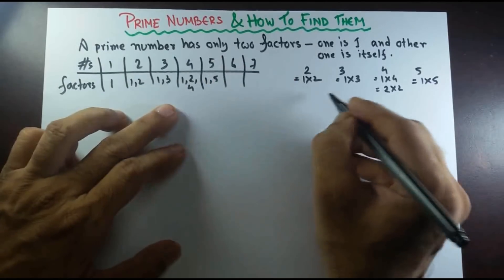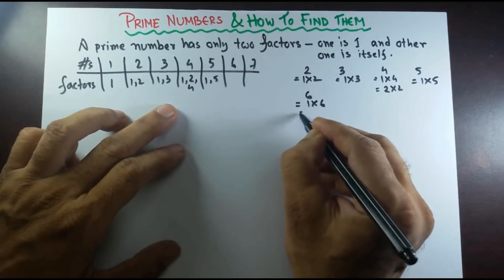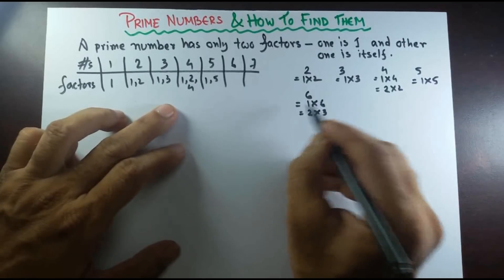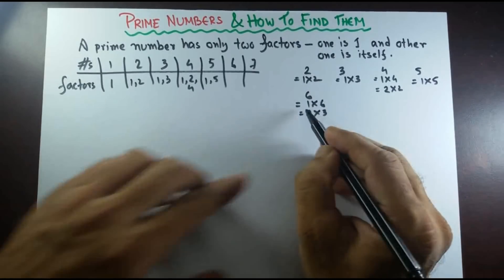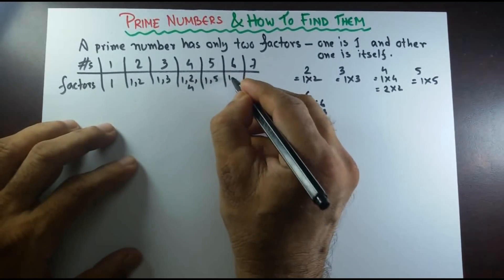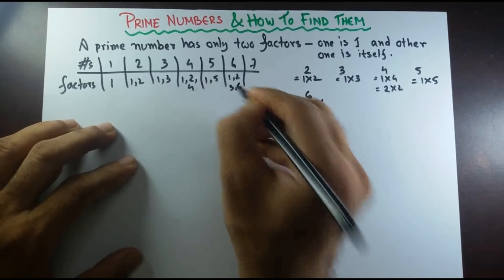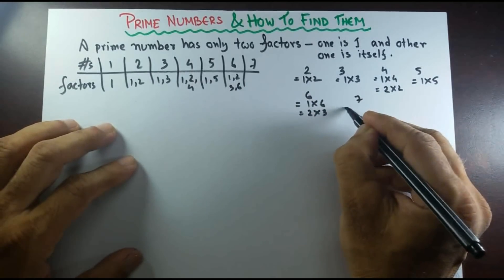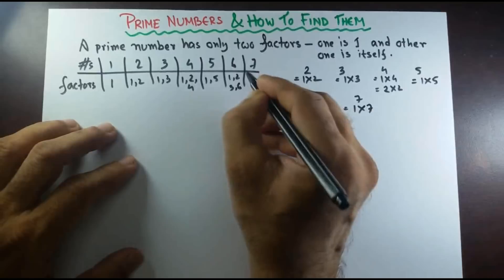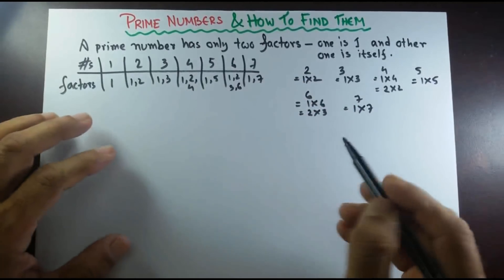6 can be written as 1 times 6 or 2 times 3 — two sets of pairs. So 1, 2, 3, 6 — there are four factors. And 7 can be written as 1 times 7, so 1 and 7 are the factors. This is how we find out all the factors.